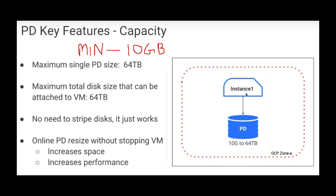The minimum size of a persistent disk is 10 GB and the maximum size is 64 TB. You can attach 16 persistent disks to any given instance, but all together you can only have 64 TB. You can have one disk as 200 GB, one disk as 5 TB — something like that. The maximum size of a disk and the maximum size for an instance is the same 64 TB. Let's get into the practical now.